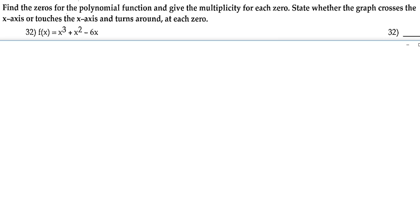So here we have f of x is equal to x cubed plus x squared minus 6x. The highest degree we have in this polynomial is 3, so that tells us that we're going to have three zeros.